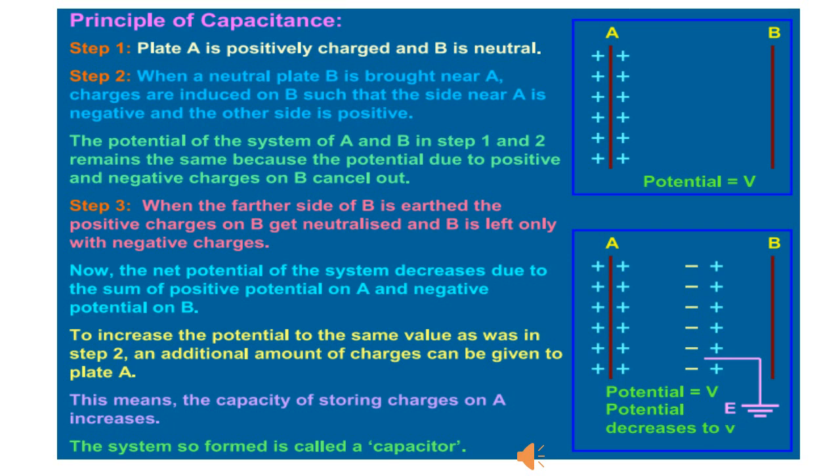If the positive phase of plate B is earthed, its positive charge gets neutralized due to the flow of electrons from the earth to plate B. Negative charge on B is held in position due to the positive charge on A. The negative charge on B reduces the potential of A considerably and hence increases its capacitance by a large amount.